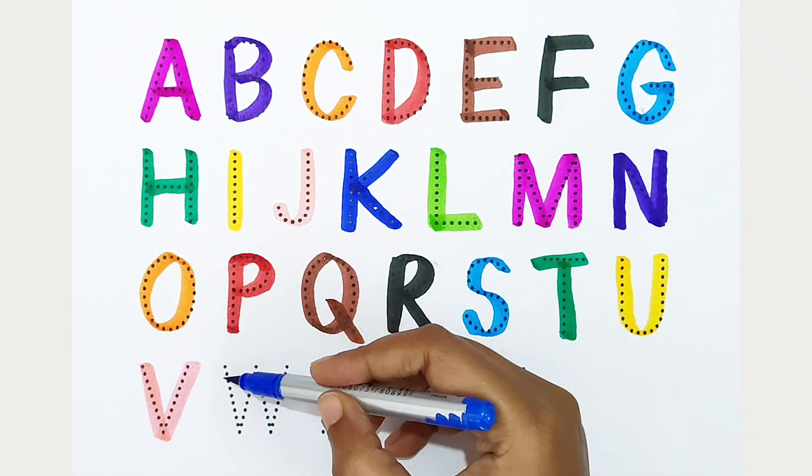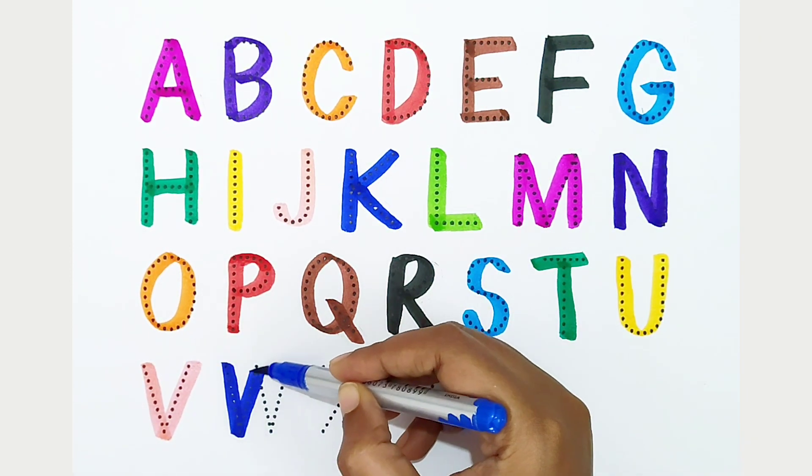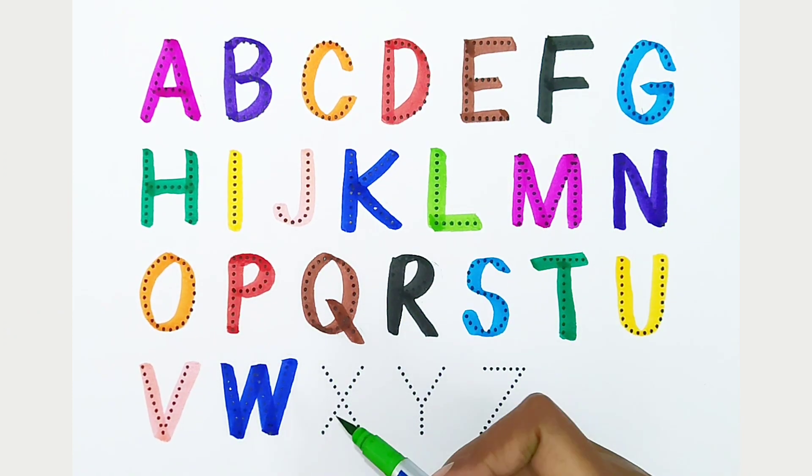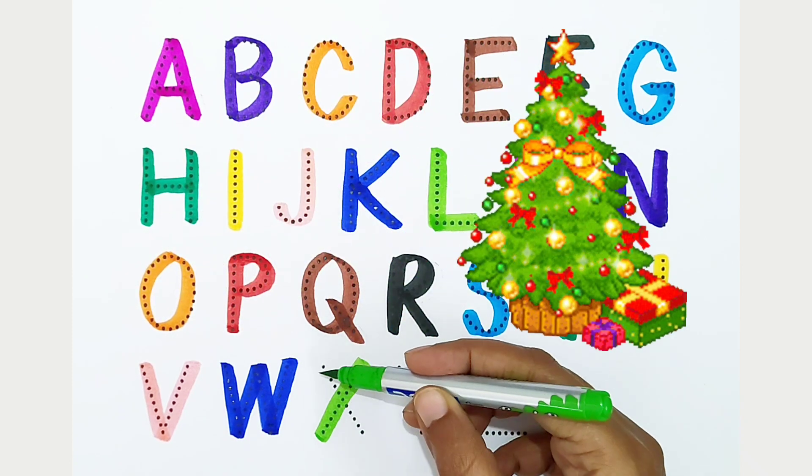W: dark blue color. W is for water. X: light green color. X is for Christmas.